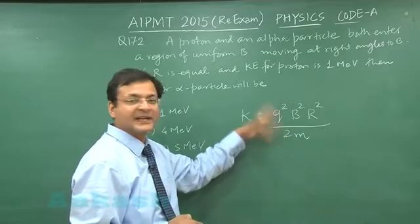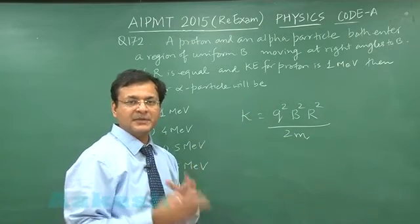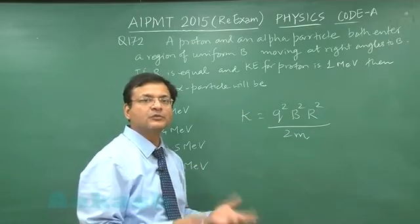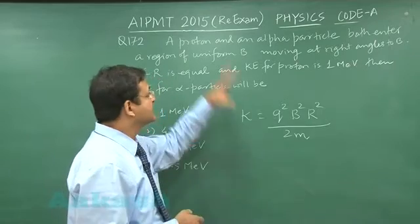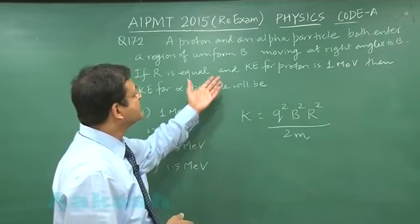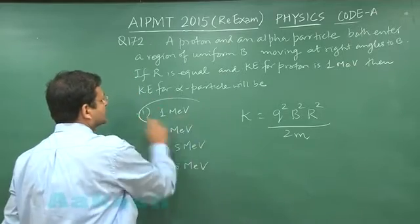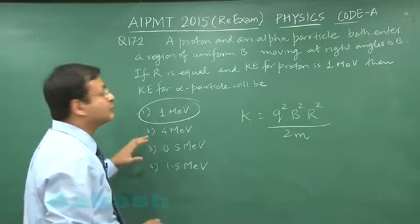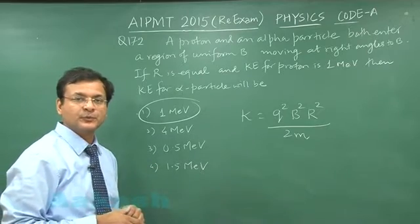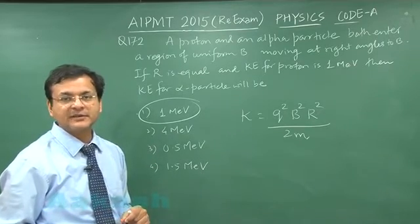But if you talk about alpha particle, then q is 2, 2 square is 4 and mass is 4. Once again division gives you 1. So that means proton and alpha particle both will have same kinetic energy in this particular question. So whatever is the kinetic energy of proton, the same will be the kinetic energy of alpha particle. So your correct answer will be 1 mega electron volt. That is the answer to question 172.